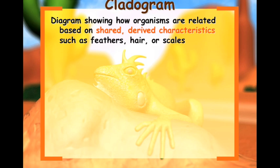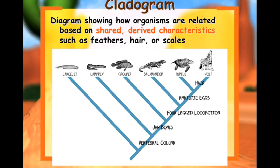We have what is known as a cladogram — a diagram showing how organisms are related based on shared, derived characteristics such as feathers, hair, or scales. In this cladogram, organisms are on the top and characteristics are on the side, with time running left to right from oldest to newest. Starting with vertebral columns, everything in the category has one. Moving up to jawbone, the grouper and up have that. Four-leg locomotion excludes the grouper, lamprey, and lancelet — so salamander, turtle, and wolf all use four-leg locomotion. Breaking down further into amniotic eggs leaves turtle and wolf, and finally the characteristic of hair refers to just the wolf.